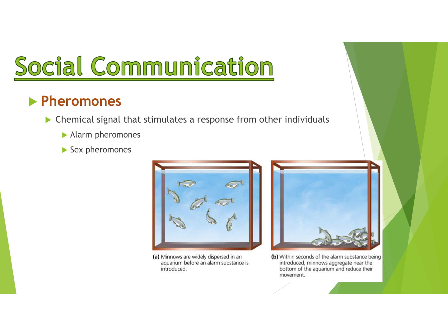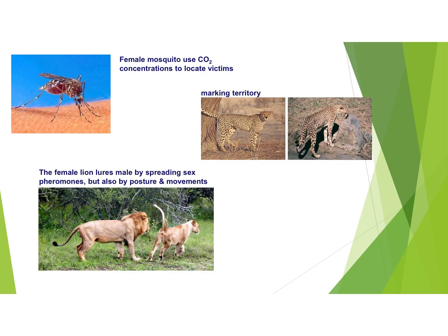Another form of social communication is through pheromones, which are chemical signals. Sex pheromones signal reproductive readiness. Alarm pheromones, for example in fish, cause the group to move to the bottom of the tank. Mosquitoes use CO2 in your breath to locate you. Territory marking involves urinating to leave pheromones signaling ownership of an area. Female lions also spread pheromones to signal readiness to mate.